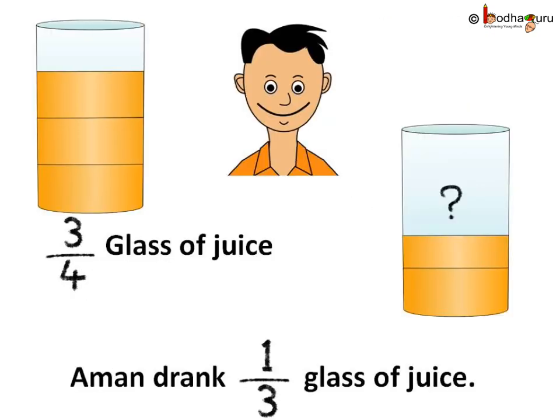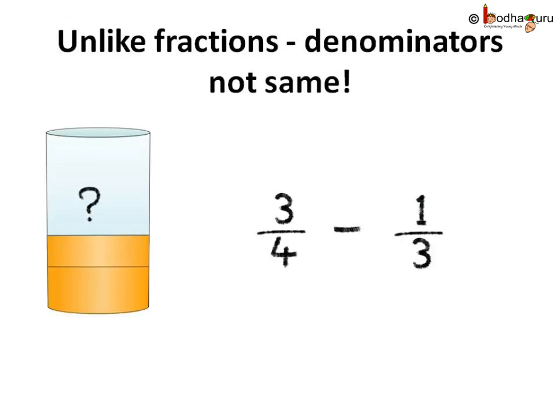Let us take another example to understand more. Suppose Aman had three by four glass of juice and he drank only one-third of the glass. How much juice was left in the glass? So, just like we did fraction addition, when the fractions are unlike fractions and the denominators are not the same, we need to make them the same to perform subtraction.